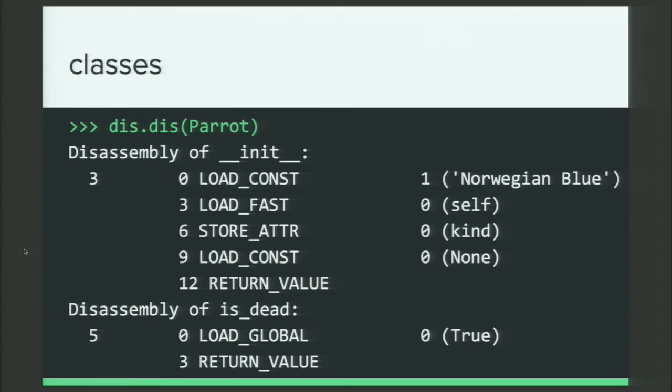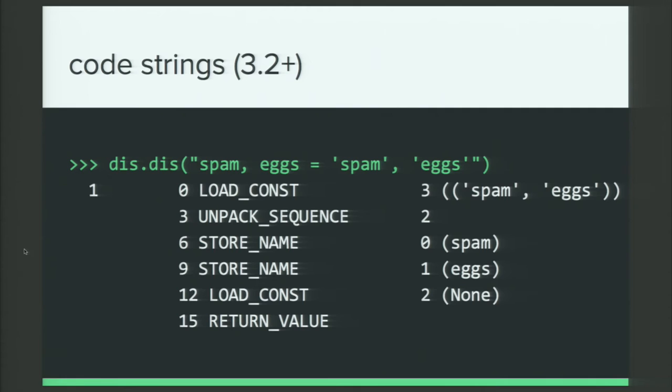Another thing we can disassemble if we're using Python 3.2 or newer is a string that contains valid Python code. So, we don't have to actually put that code in a module. We can just disassemble the string directly. It gets compiled to a code object and then that code object gets disassembled. So, here we are just assigning spam and eggs on one line, which is a cool thing Python lets us do. And we see a new thing, like unpack sequence. Also, a pretty self-explanatory operation name.